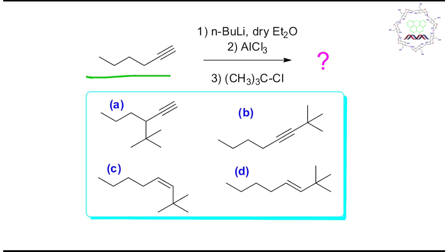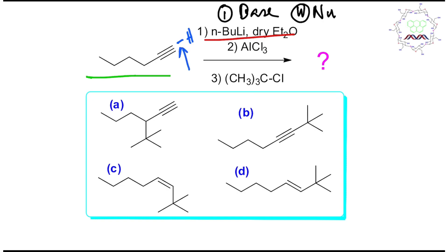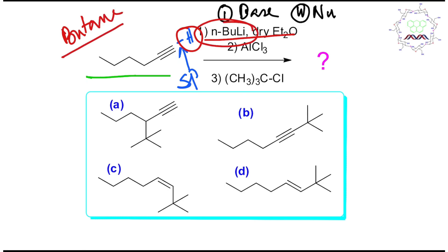I believe you have tried by yourself, so it's my turn to give you the right answer. The reactant 1-hexyne is a simple molecule, so our focus should be on n-butyl lithium with dry ether. The n-butyl lithium can act as either a base or a nucleophile. This molecule has an sp carbon–hydrogen bond, and we know that increasing s-character increases the acidity of the bond. So the first step is proton abstraction by the butyl group — a lithium exchange reaction — producing alkynyl lithium and butane.